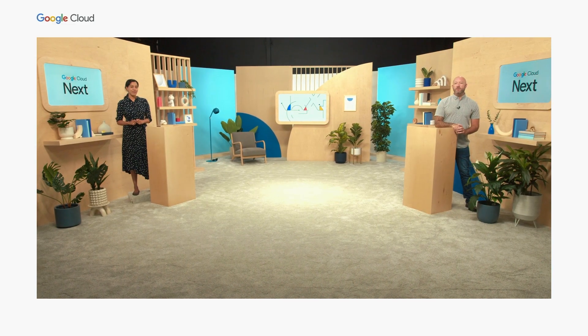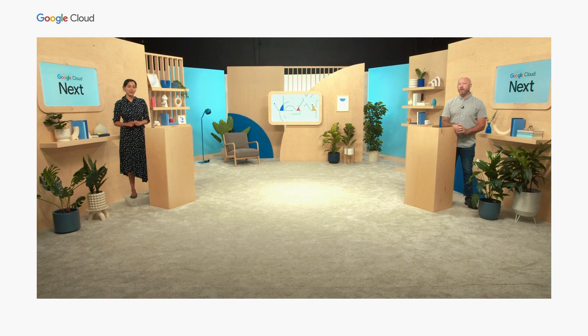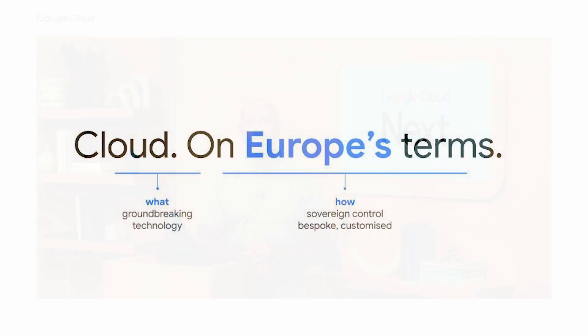We started our digital sovereignty journey in one of the most mature markets that understands and values sovereignty — the EU — back in 2019. In the past few years, we've learned a lot talking to customers, working with partners, policymakers, and local governments, understanding the key needs of this region and delivering cloud on Europe's terms: a set of carefully tailored solutions put together with local partners to truly bring the value of Google Cloud in a format that's acceptable for our global customers, starting with Europe. Now we're expanding out further to deliver robust solutions in other parts of the world, bringing cloud on your terms for your unique business needs and regulatory requirements.